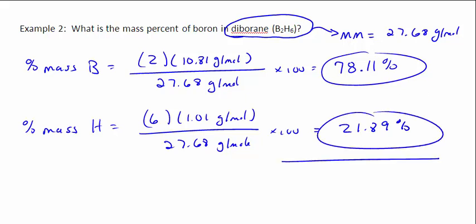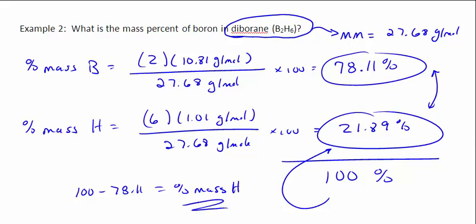Now, if we add these up, this is the full composition. Everything is boron and hydrogen. If I add those up, they need to be equal to 100. So we should double-check that. 21.89 plus 78.11 gives us 100 right on the nose. In other words, I did have a shortcut to getting the hydrogen. I could have just subtracted 100 less the 78.11 would have given me the percent mass of hydrogen in this case. So you can always find a little shortcut there for the last atom.